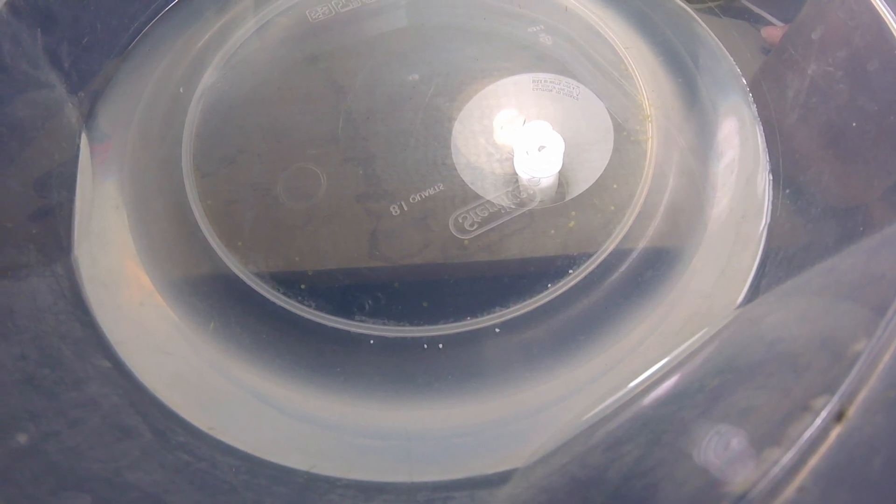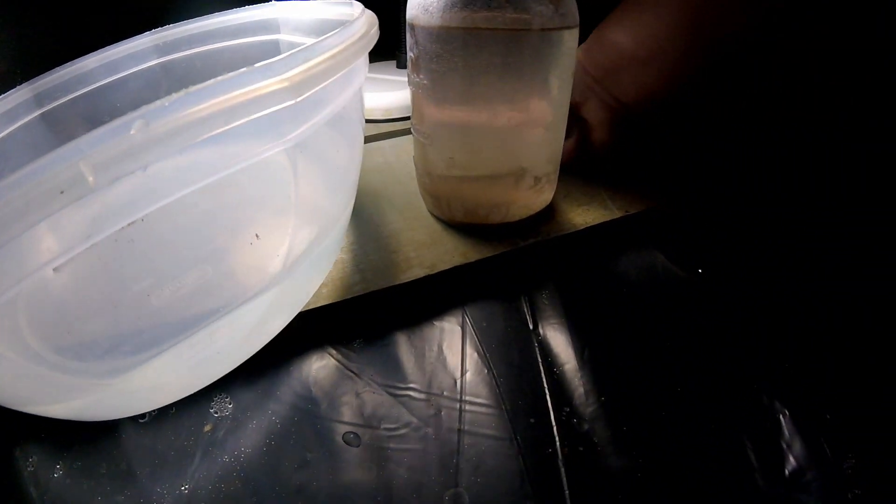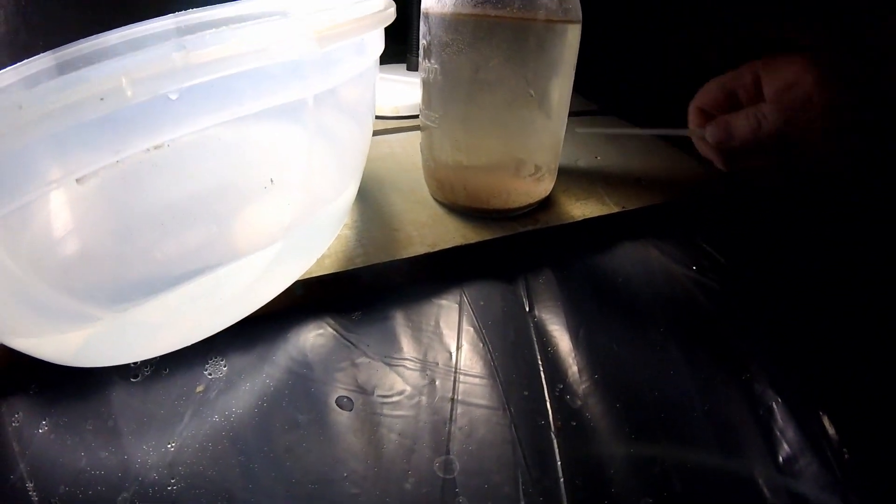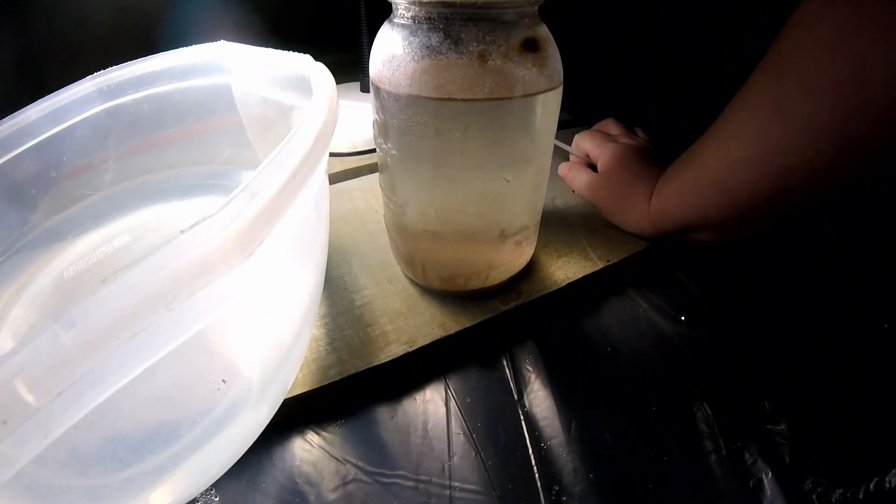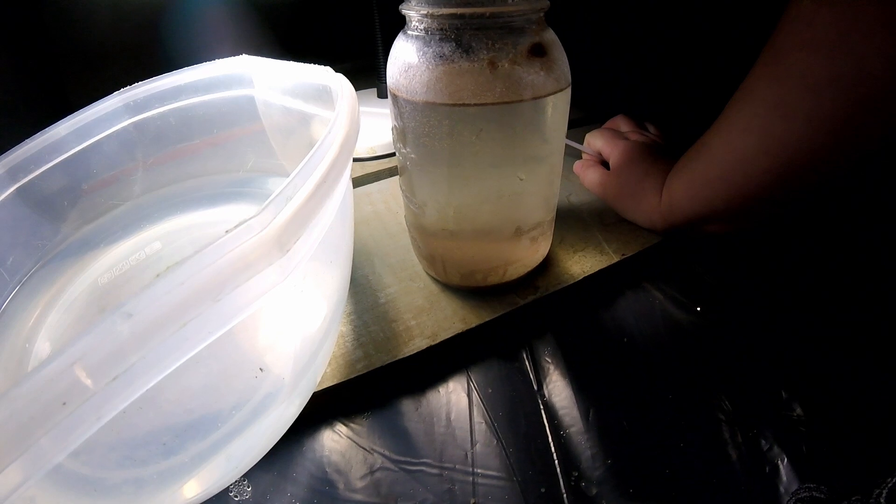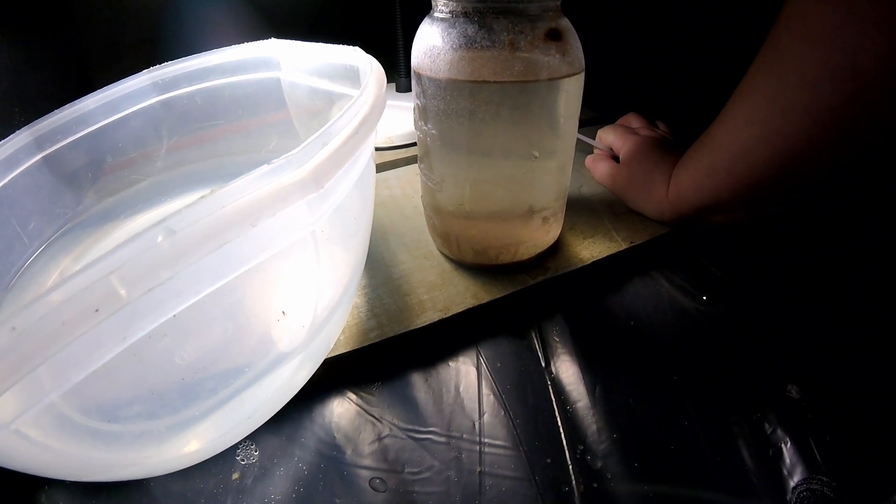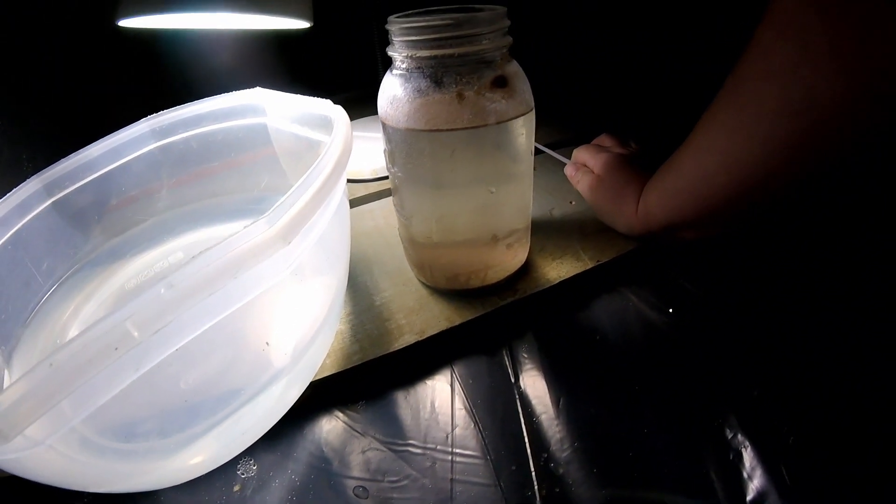About 24 hours after they hatch, up to 48 hours depending upon the temp, you want to start brine shrimp if you can. That is the single best food for the first couple weeks. After two to three weeks, depending upon the size, you can add in steamed eggs like I do or gel food.